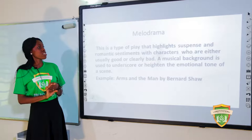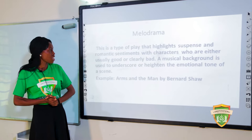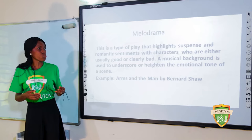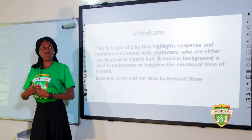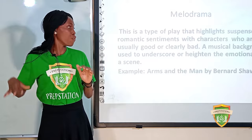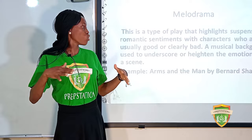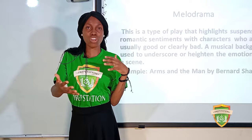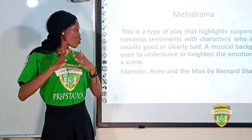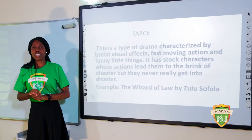Melodrama is a type of play that highlights suspense and romantic sentiments, with characters who are either clearly good or clearly bad — two extremes. There is a musical background to heighten the emotional effect, with sounds and tones to signal serious or lighter events. An example is Arms and the Man by Bernard Shaw.